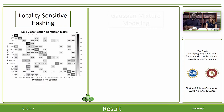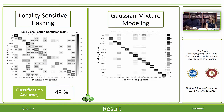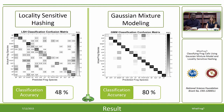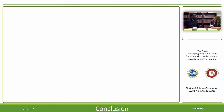Classification using LSH produces a confusion matrix. Ideally, the diagonal from the top left should contain the darker shades. Classification of LSH gives us a classification accuracy of about 48%. For GMM, we had a very similar confusion matrix, and our classification accuracy was 80%.